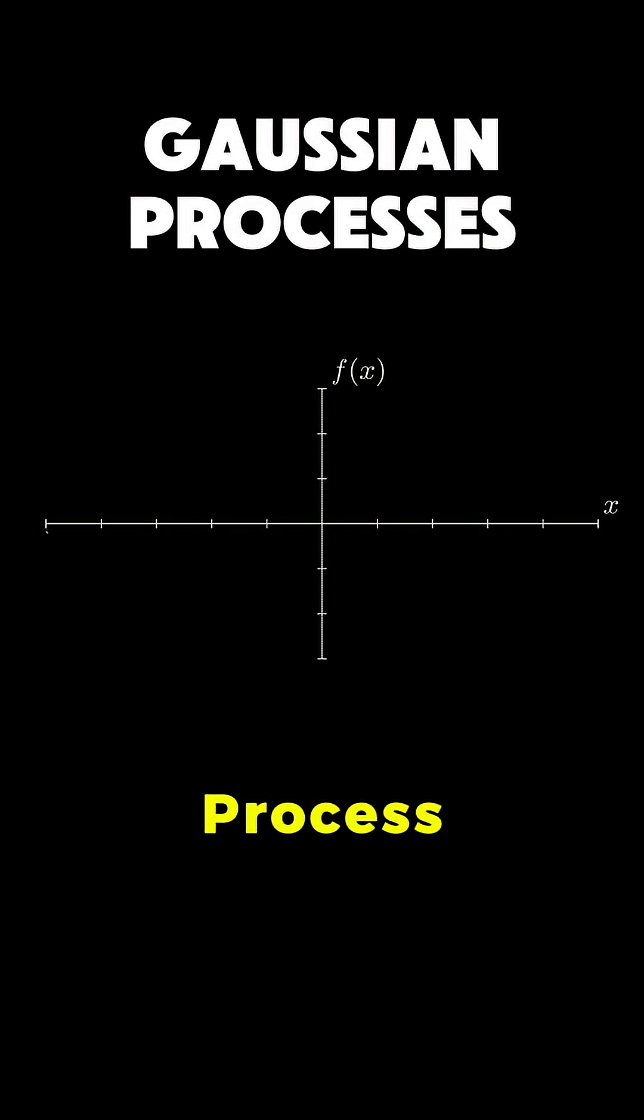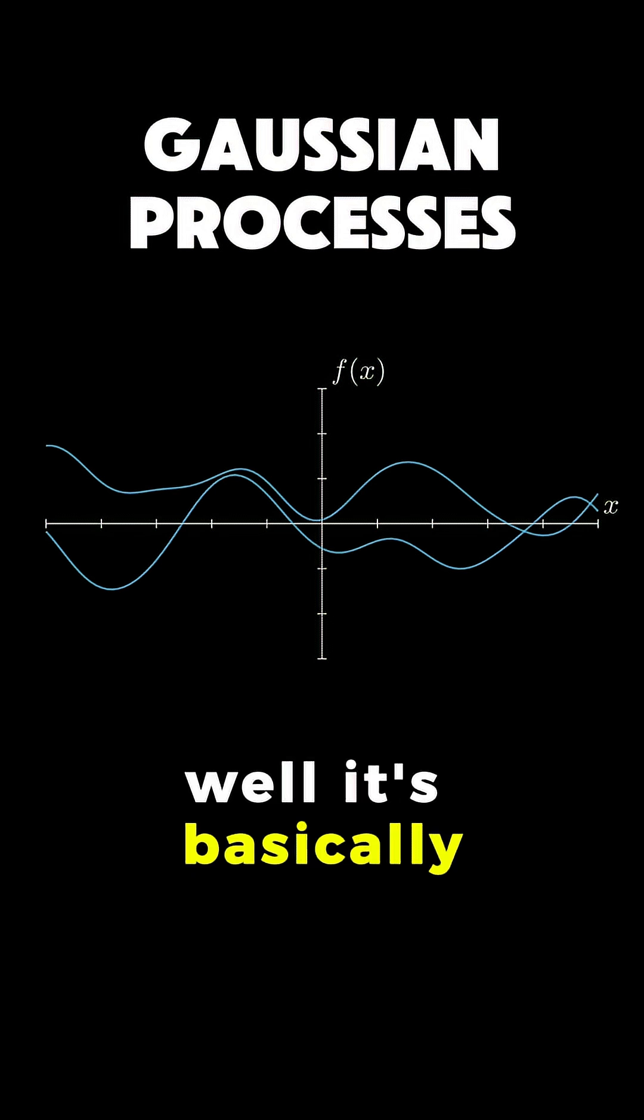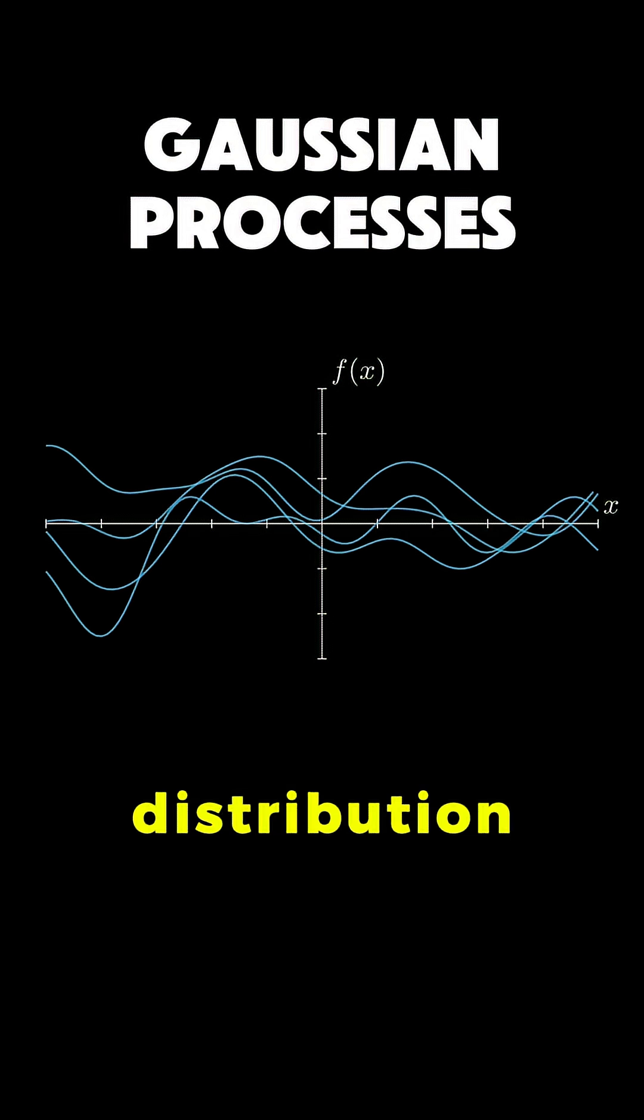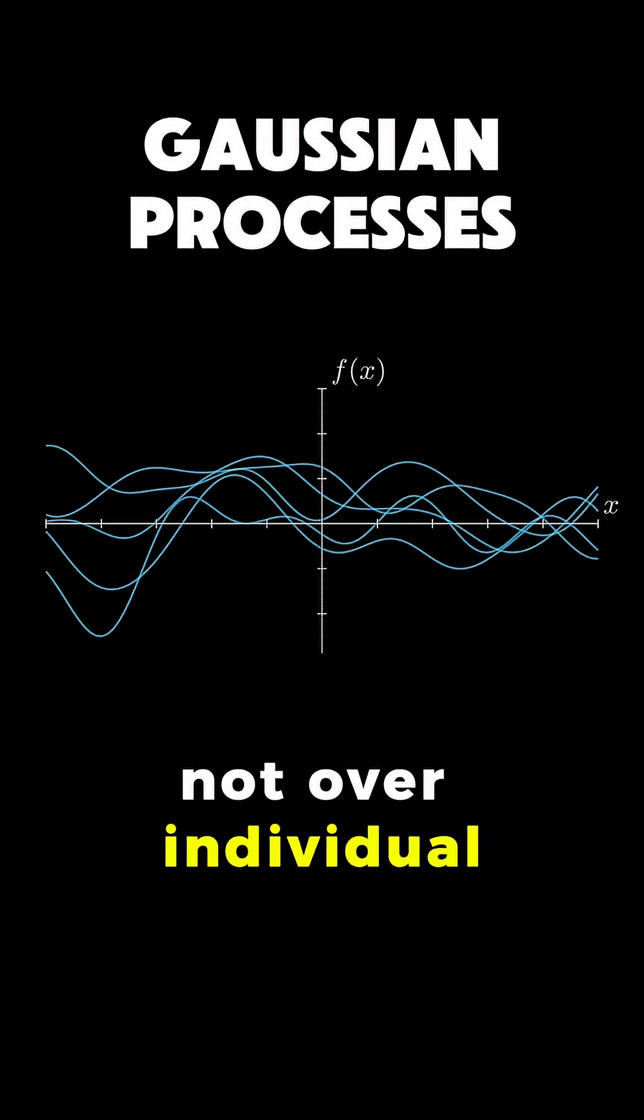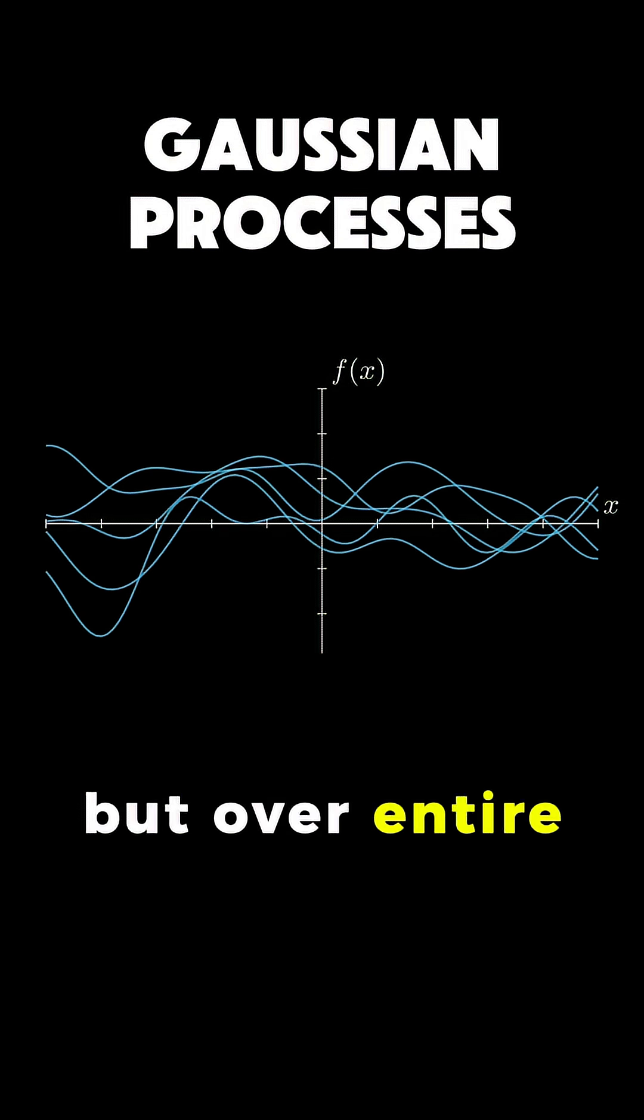What exactly is a Gaussian process? It's basically a way to define a probability distribution, not over individual points, but over entire functions.